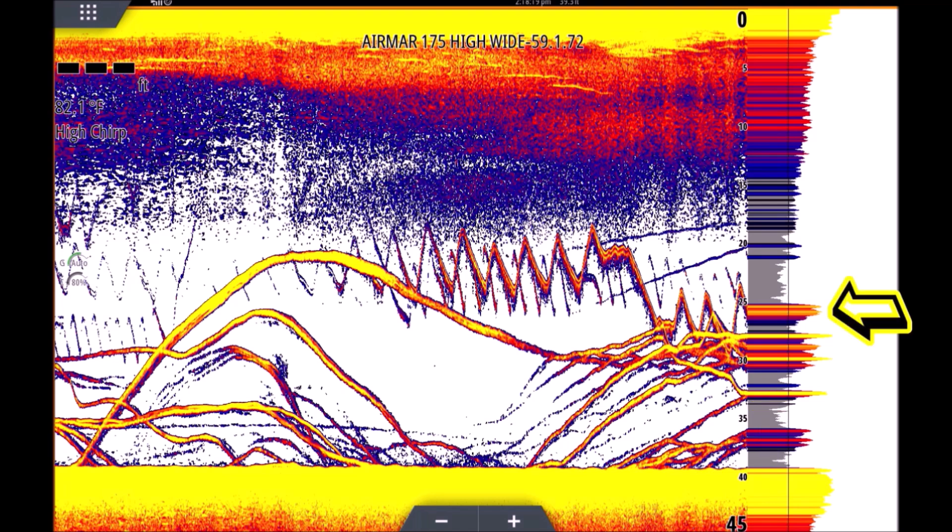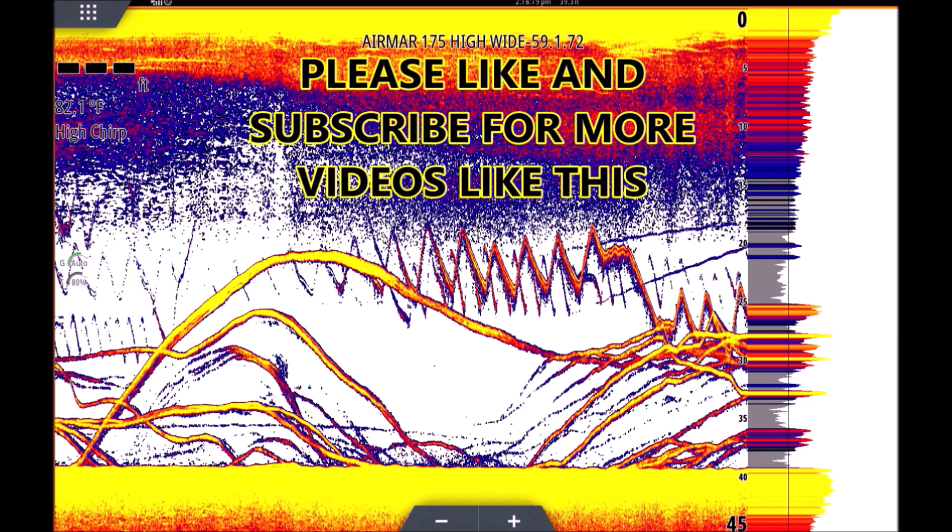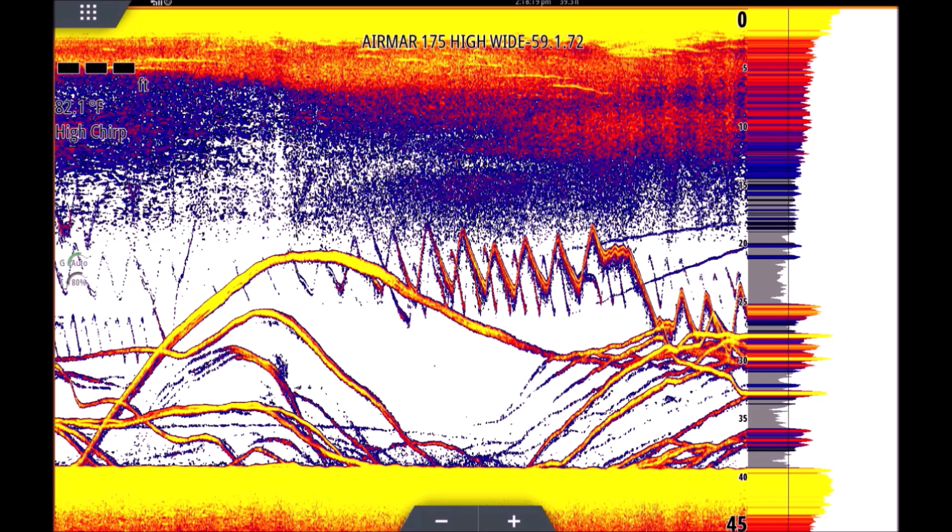If you go over a fish really fast when the boat is moving, you may only hit the fish with one ping so you only get one little dot on the screen. When a fish spends a lot of time under the transducer it can absorb a lot of pings so the history makes it